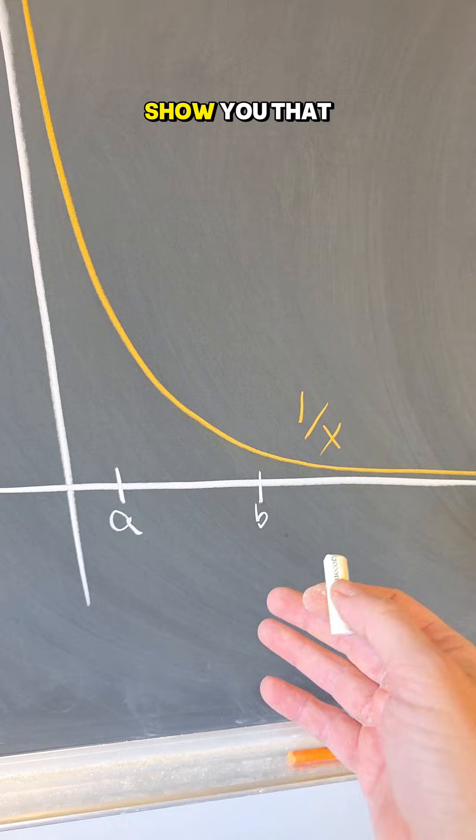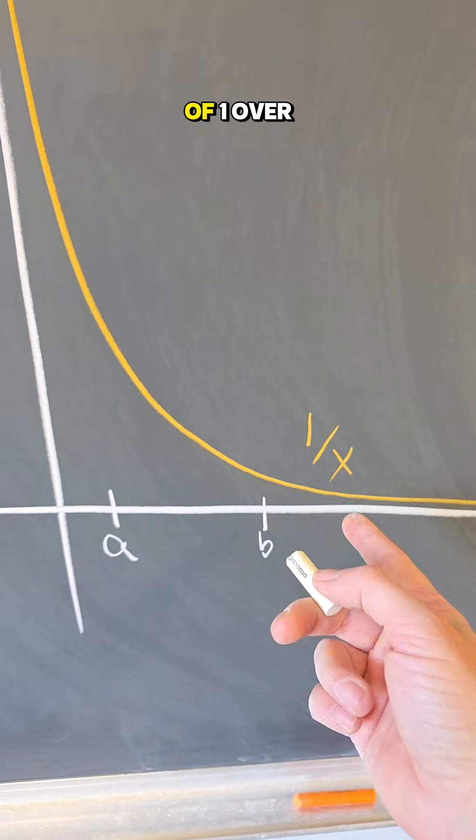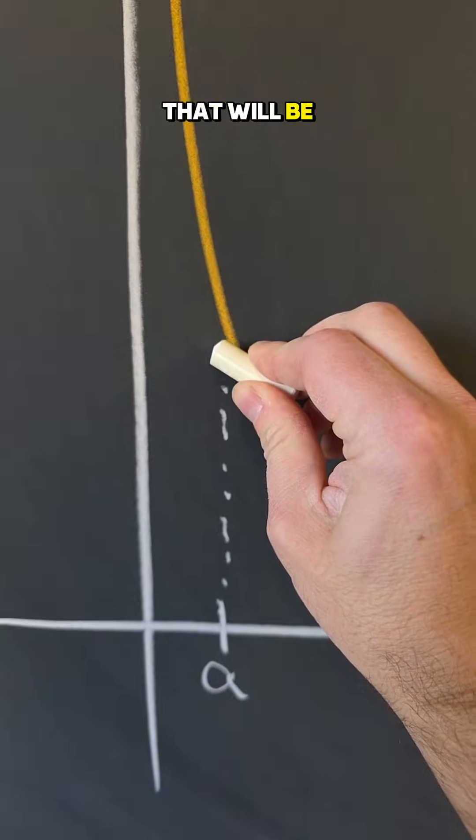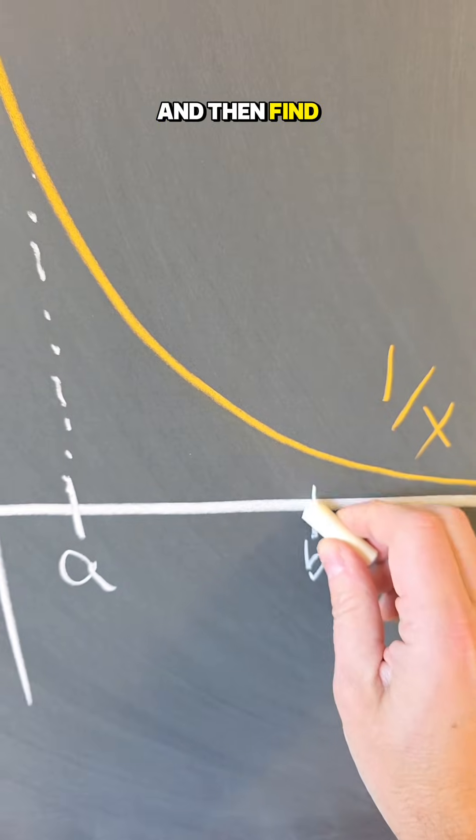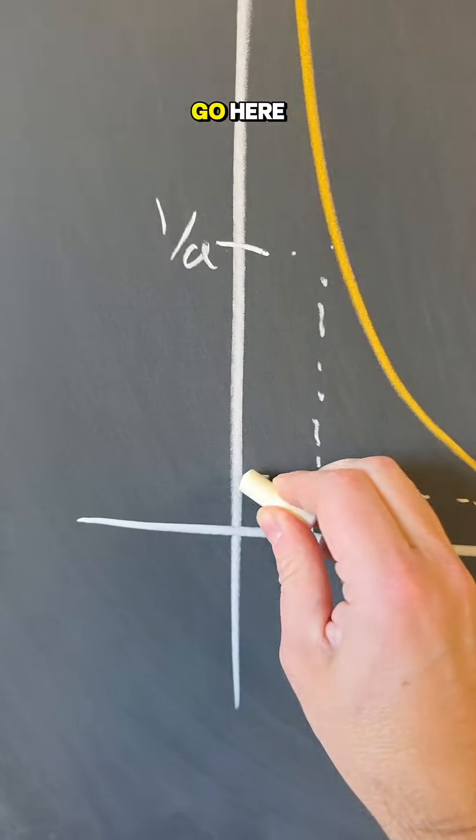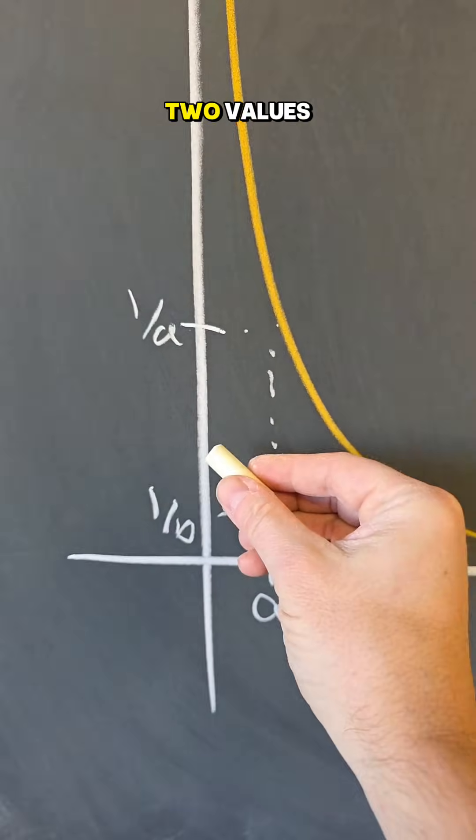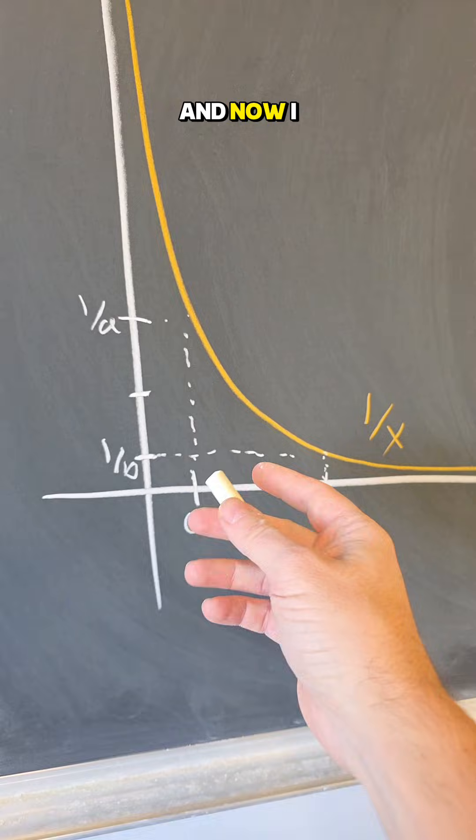Now let me show you that we wouldn't expect it visually either from the graph of 1 over X. Here's a graph of 1 over X, so let's find 1 over A that will be here, and then find 1 over B. So if we go here, this is 1 over B. Now find the average of these two values that will be the middle point between those two points.